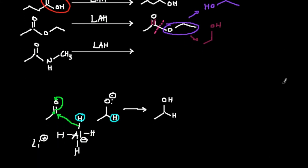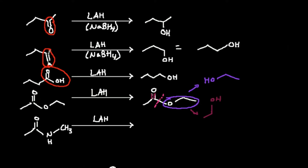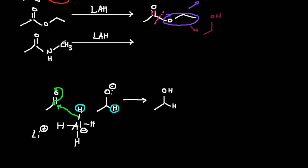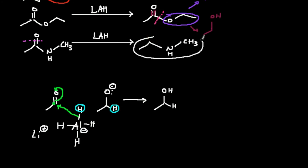Amides are very different. With ketones, aldehydes, carboxylic acids, and esters, LAH gives alcohols. But with lithium aluminum hydride reduction of amides, we get some kind of amine. The way to think about it: take the C=O double bond and imagine completely clipping off that double-bonded oxygen. Nothing on the nitrogen changes. What you're left with is the carbon skeleton plus the nitrogen — that's your product of amide reduction by LAH.